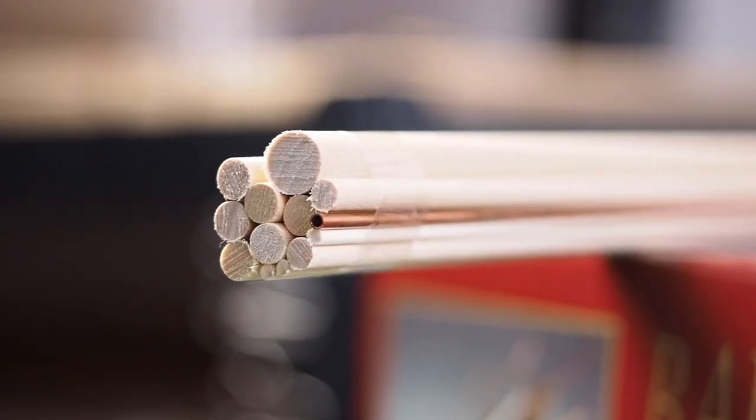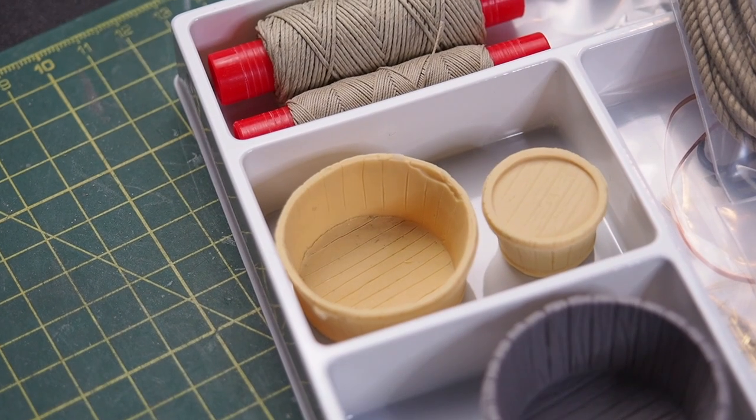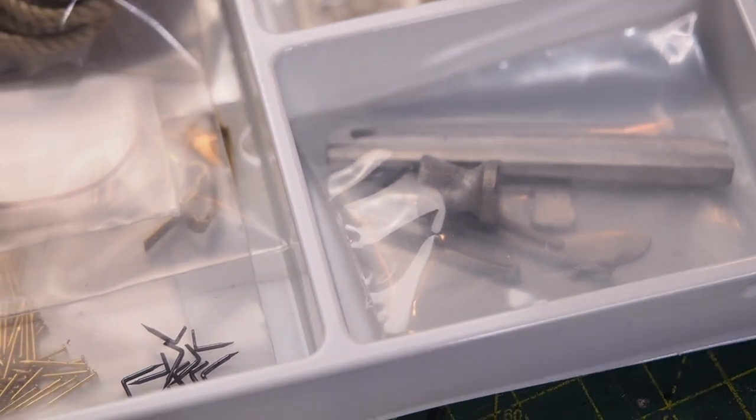The whale boat of New Bedford by Amati Models. The clinker built whale boats used in 1860 were light and sturdy.